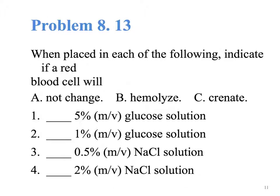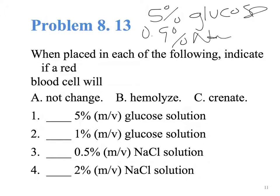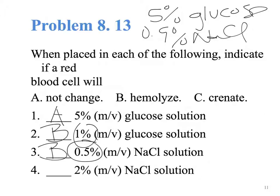Going back to slide 47, we have 5% glucose as the concentration of the red blood cells. So if we have 5%, this will not change — that's isotonic. For 1% glucose, that's less than 5%, so that will make them swell — hypotonic. A lower sodium chloride concentration also makes them swell. And 2% sodium chloride is more than 0.9%, so it will make them shrink — hypertonic.